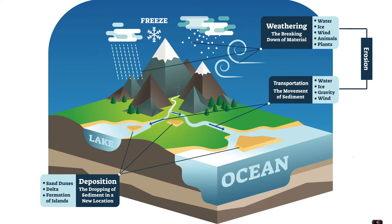Here's a diagram to show these three processes. First we have the weathering process, whereby large rocks are broken down into smaller sediments — and we said this could be biological, chemical, or physical.